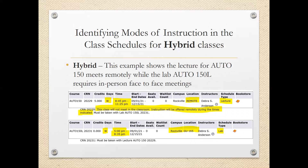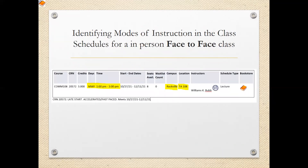Hybrid classes are required in automotive, automotive mechanics, building trades, and health sciences programs. For in-person face-to-face classes, the schedule will give the campus, the building and room number, and in many cases, the instructor.